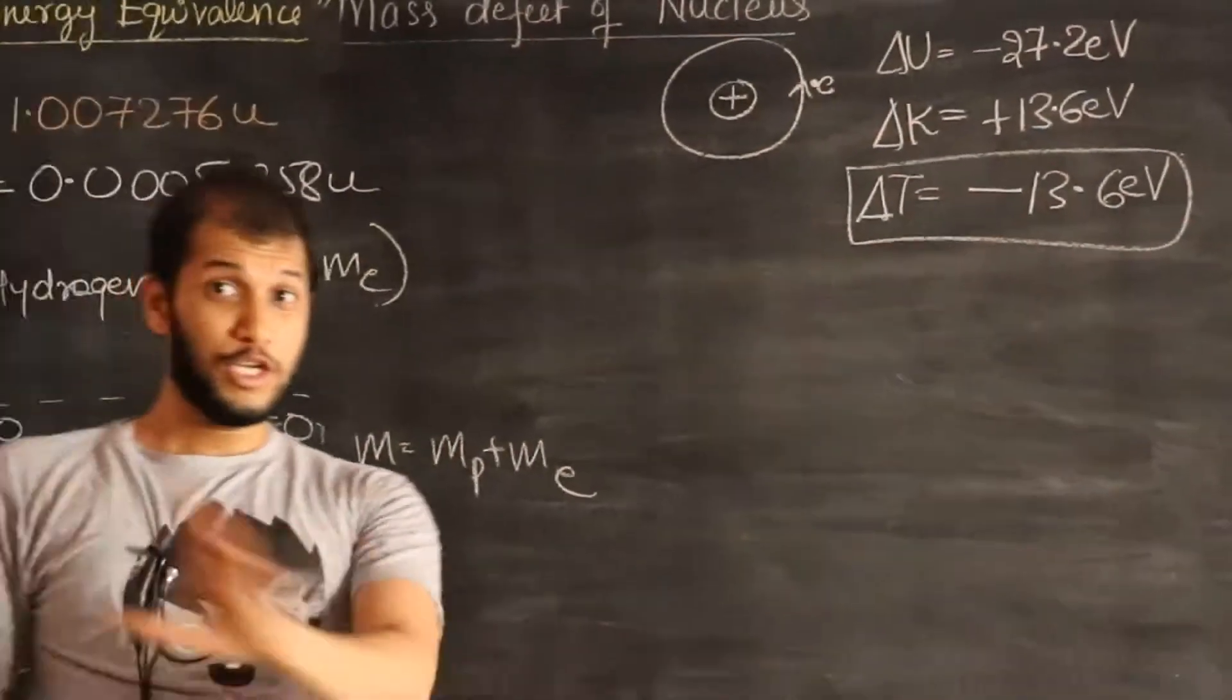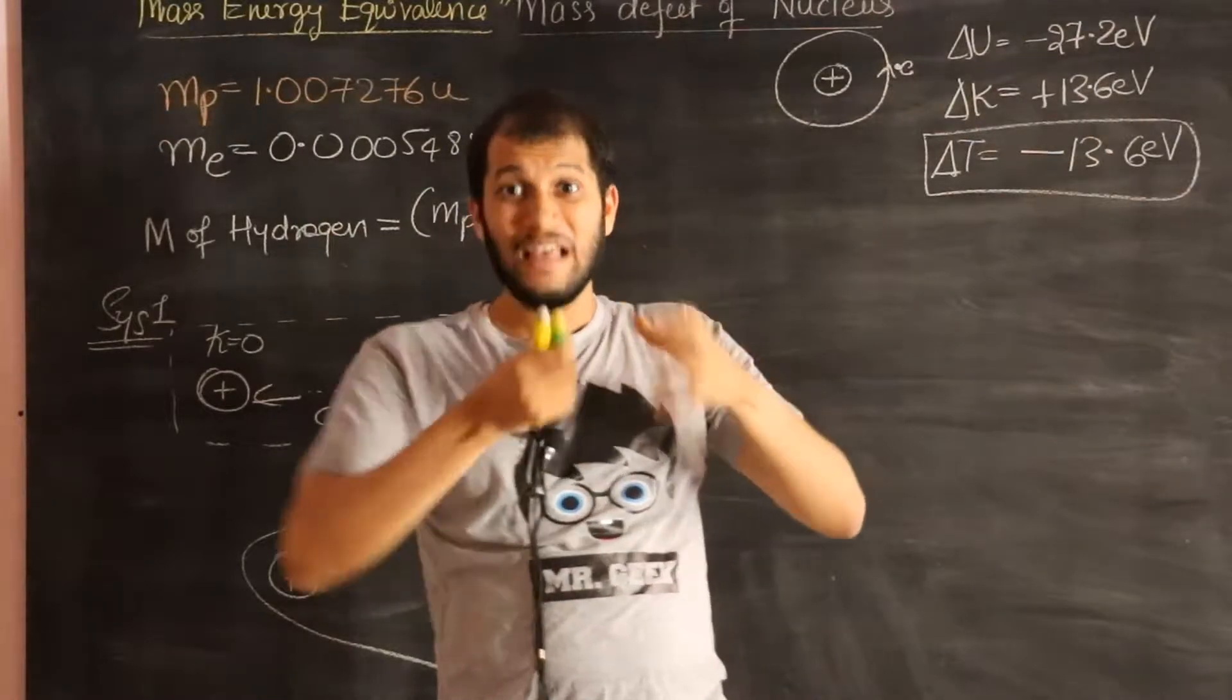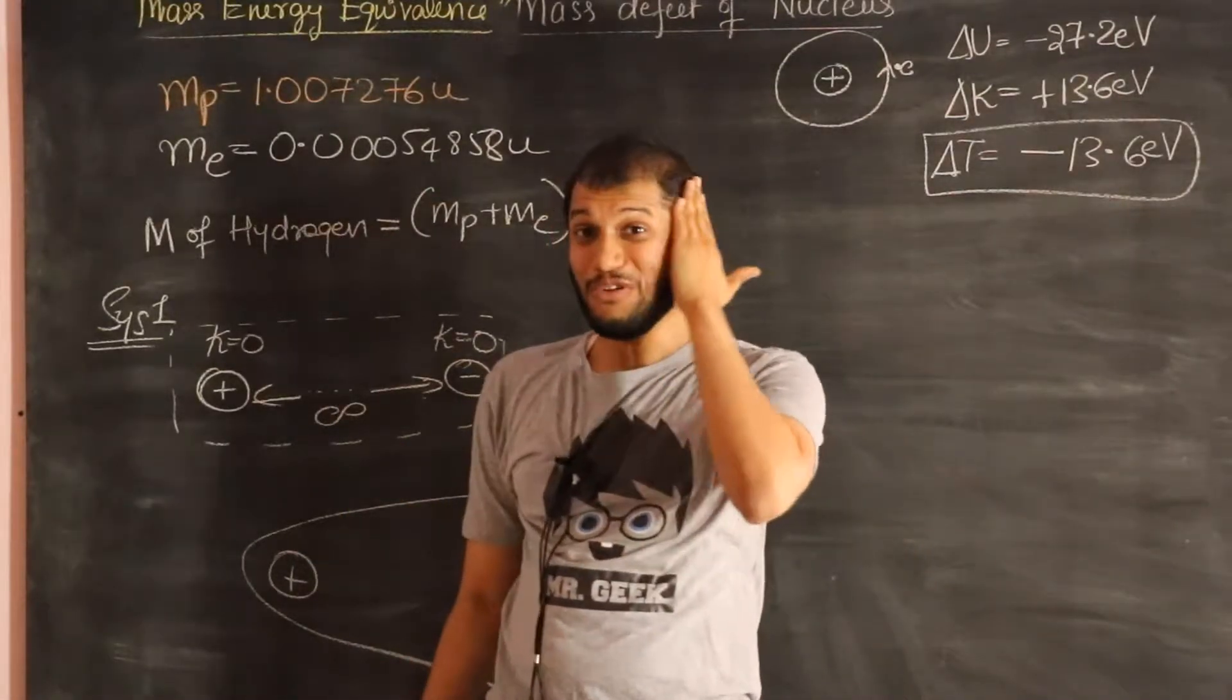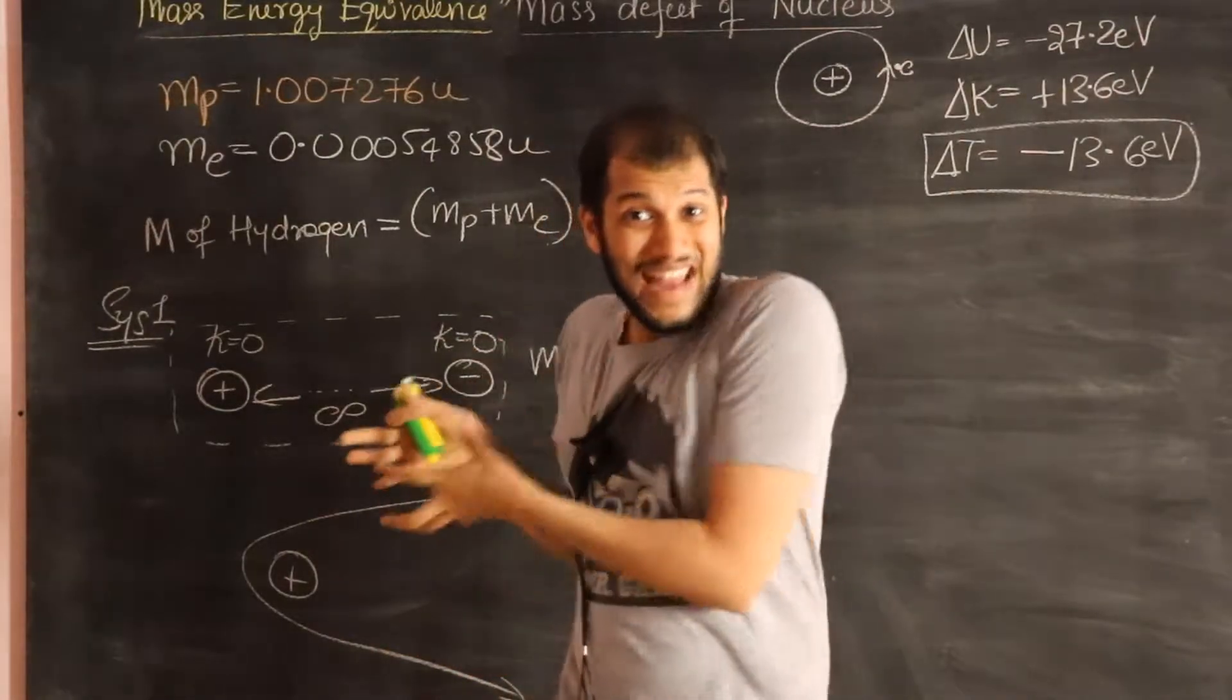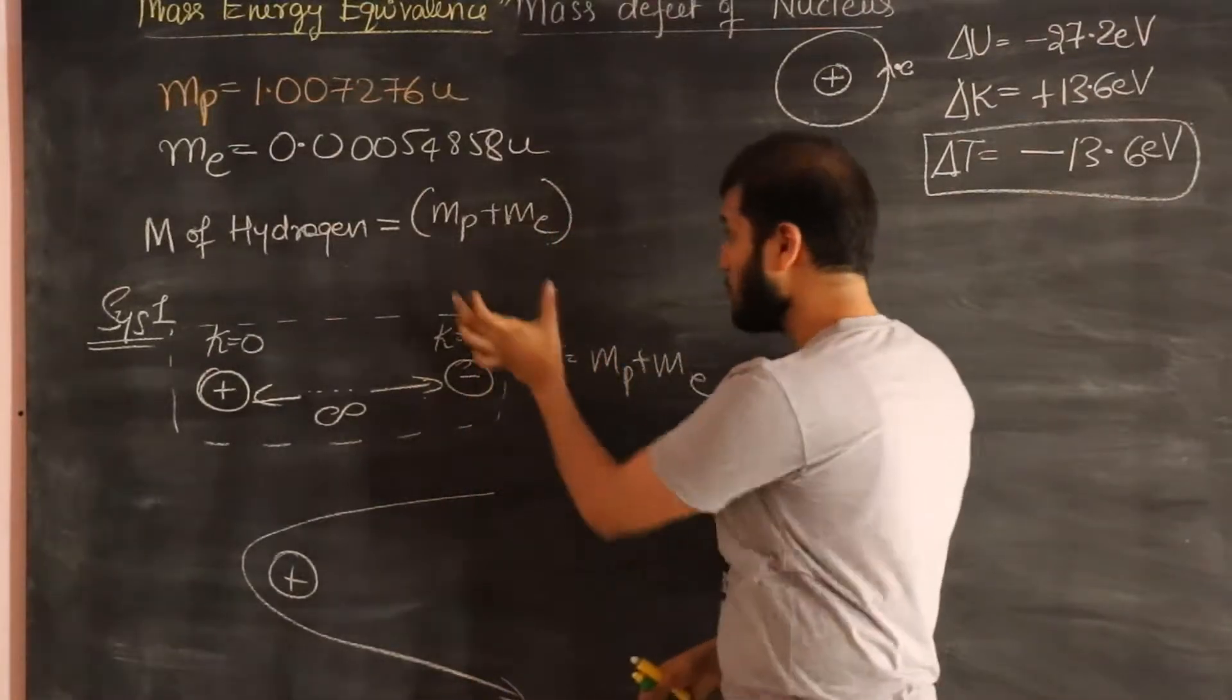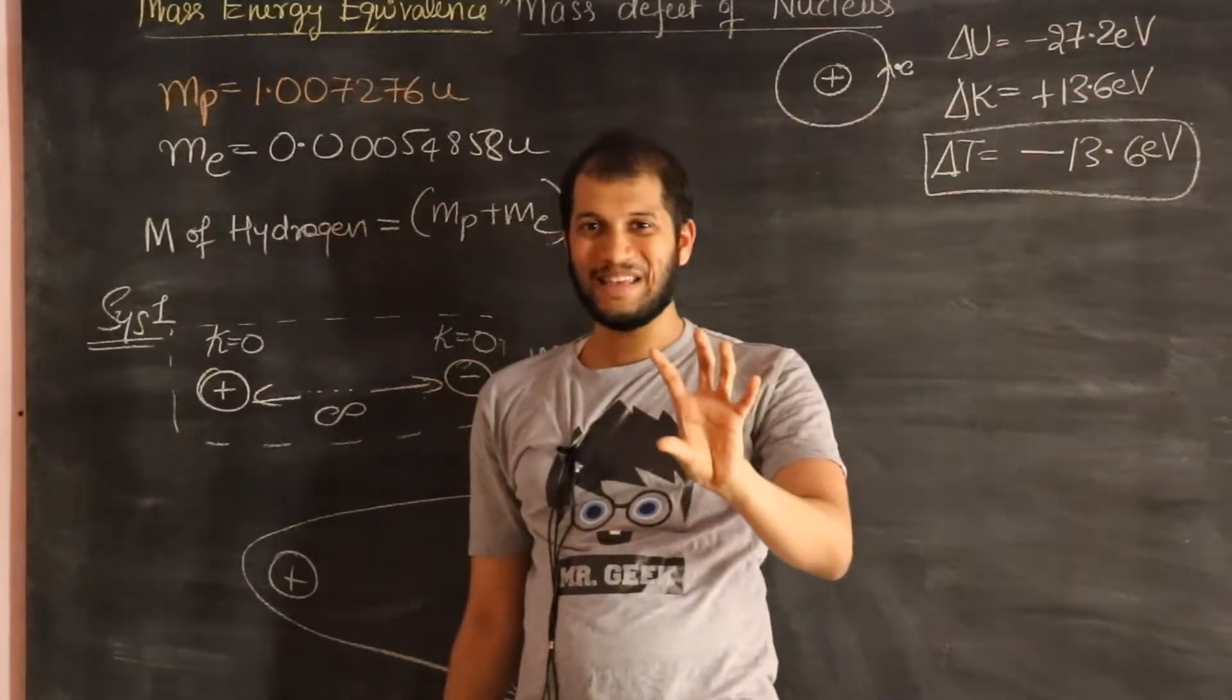And long story short, when the electron and proton come close to each other to form a hydrogen atom, some energy has been removed from this system. If the energy is removed from the system, what does Einstein tell us? That energy which was removed actually had some mass. It was that mass that was contributing over here. But now you remove that much energy from the system, you're not weighing that mass anymore.